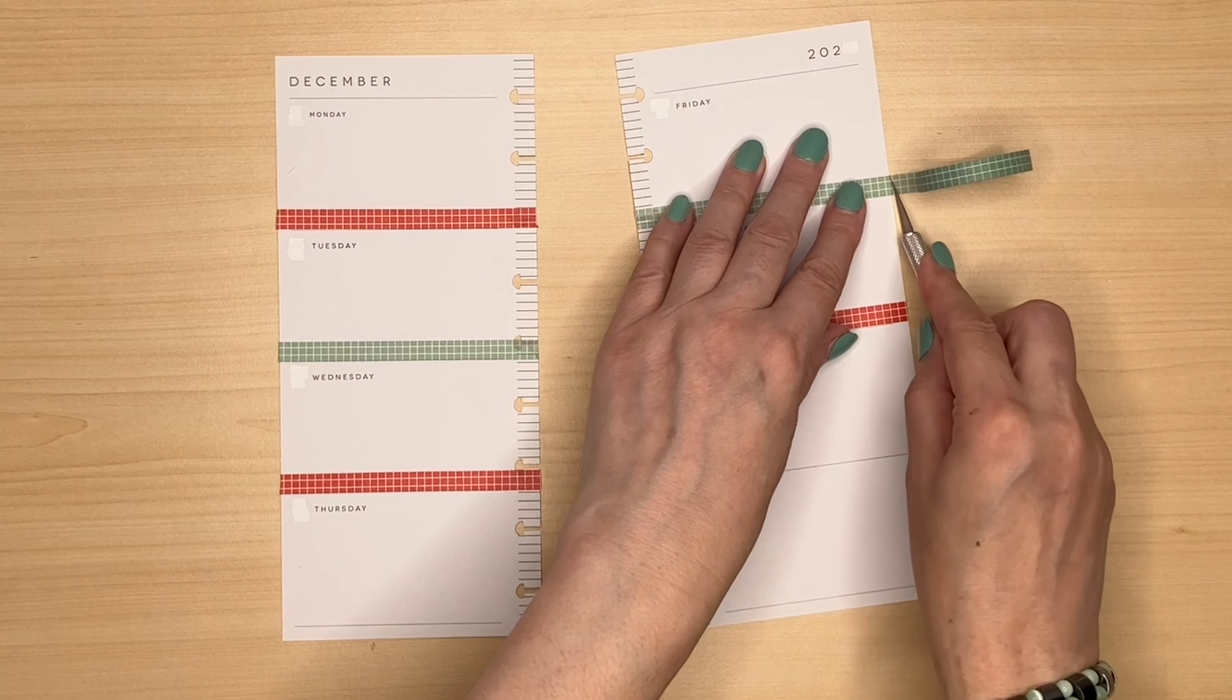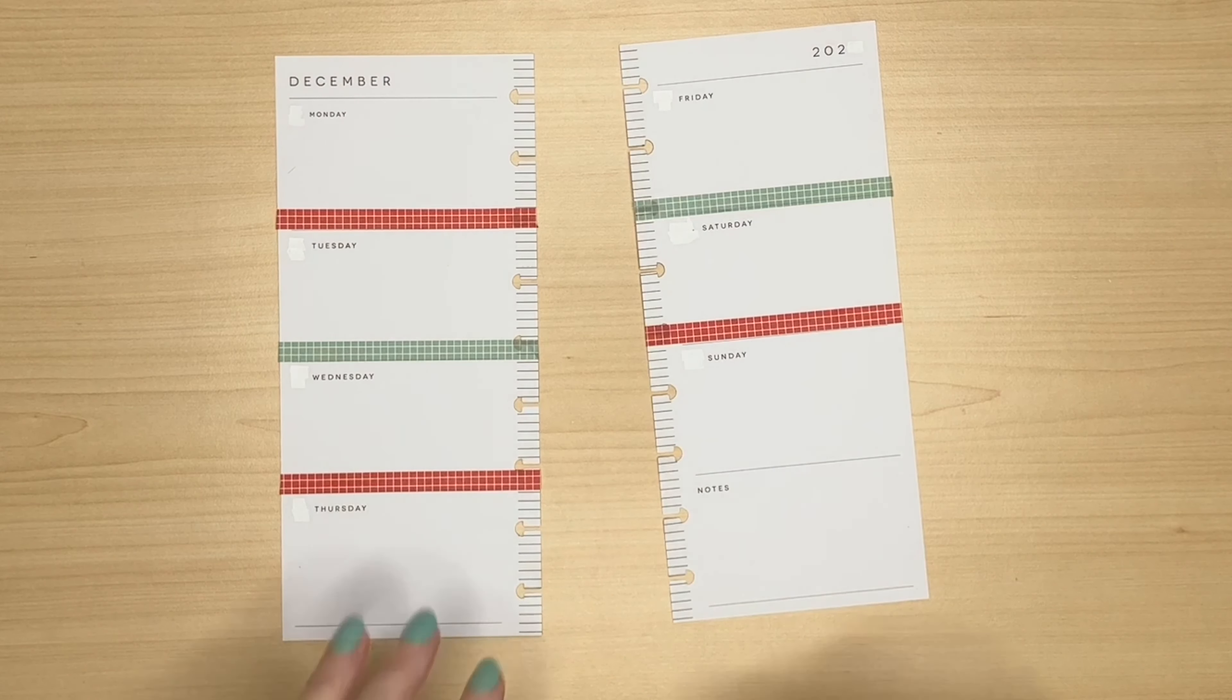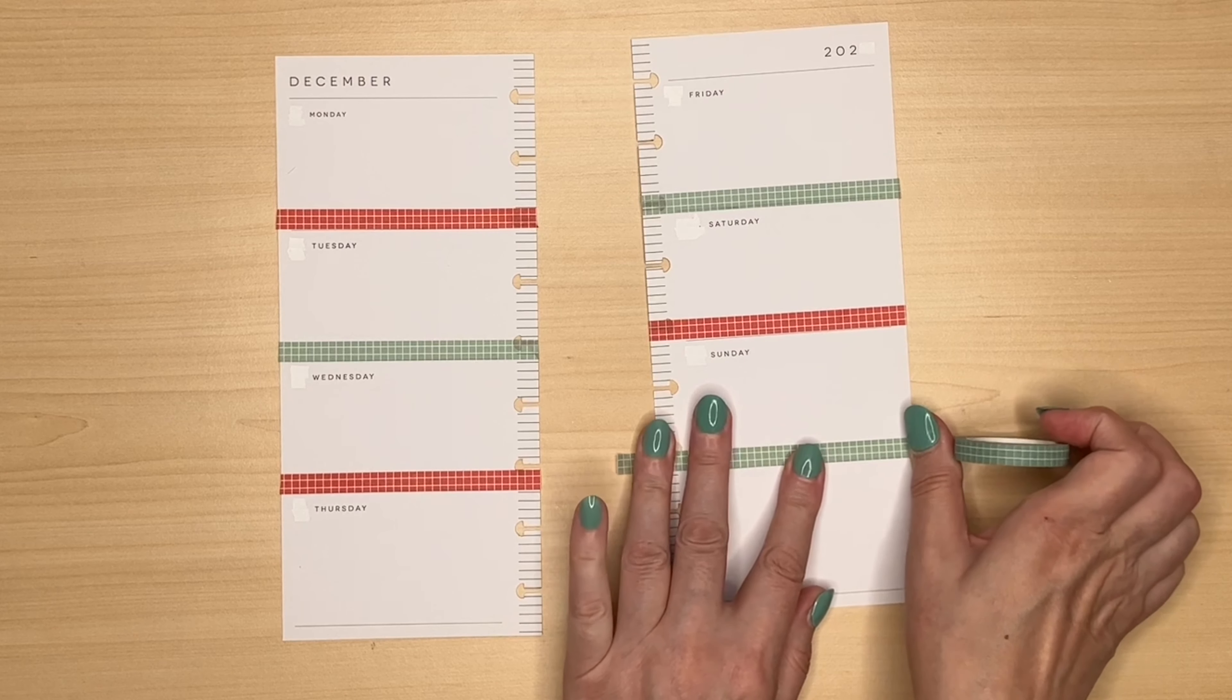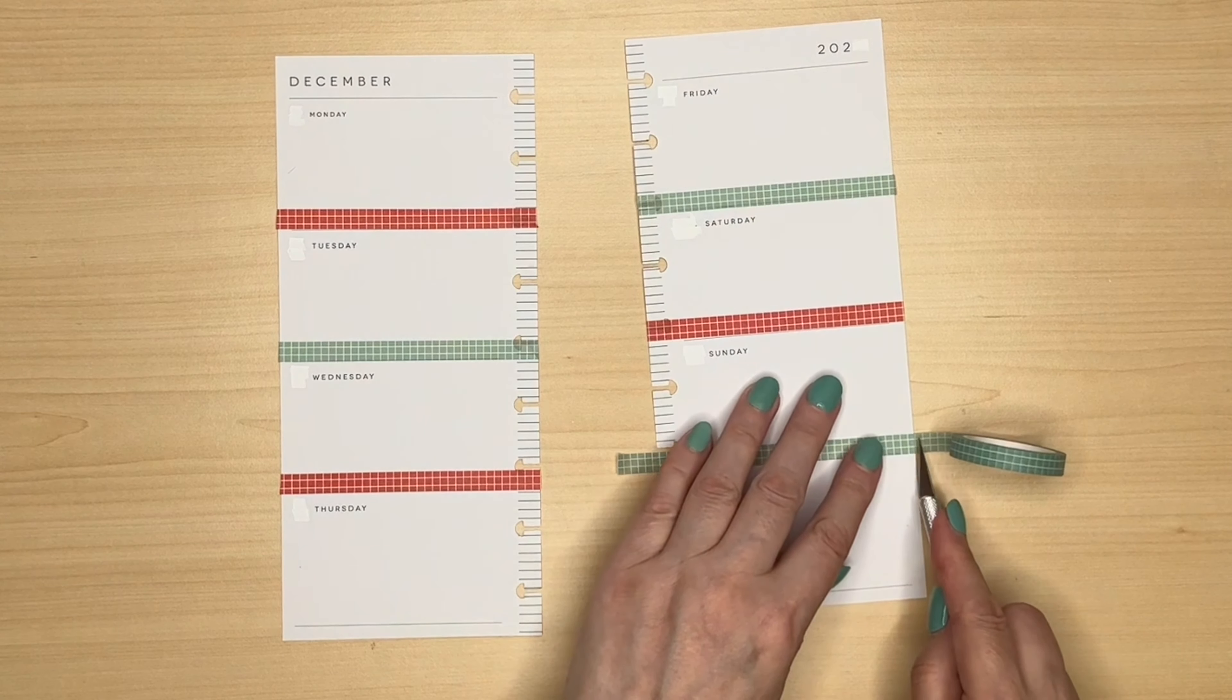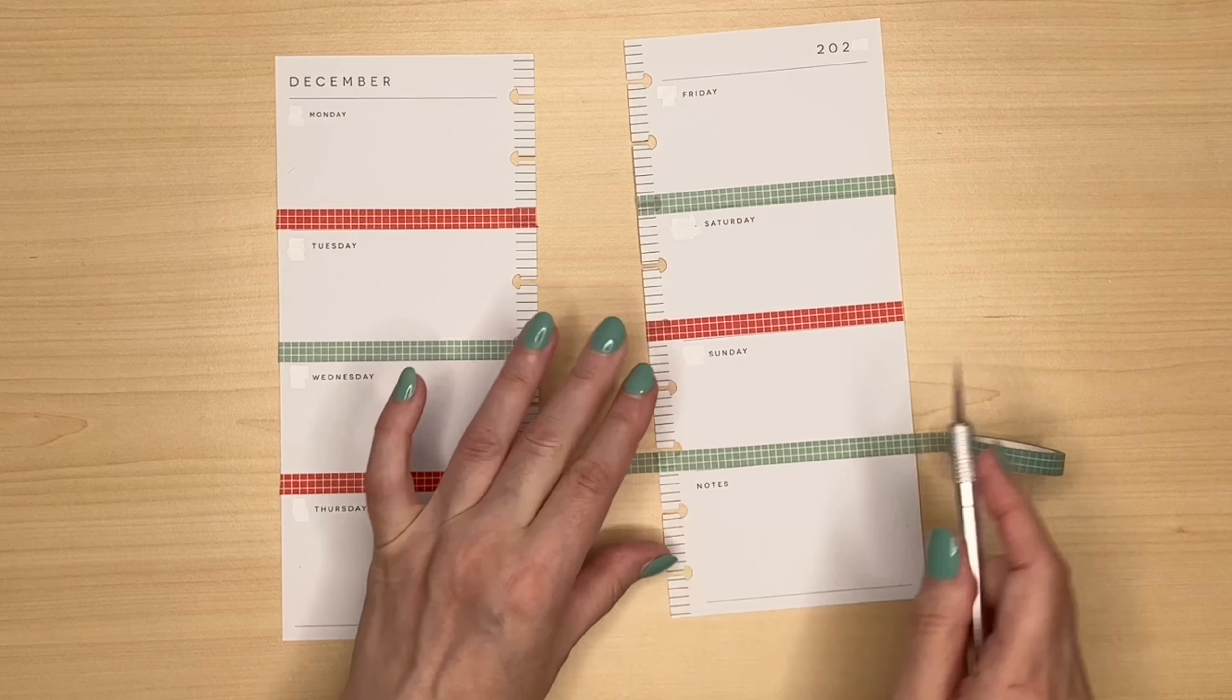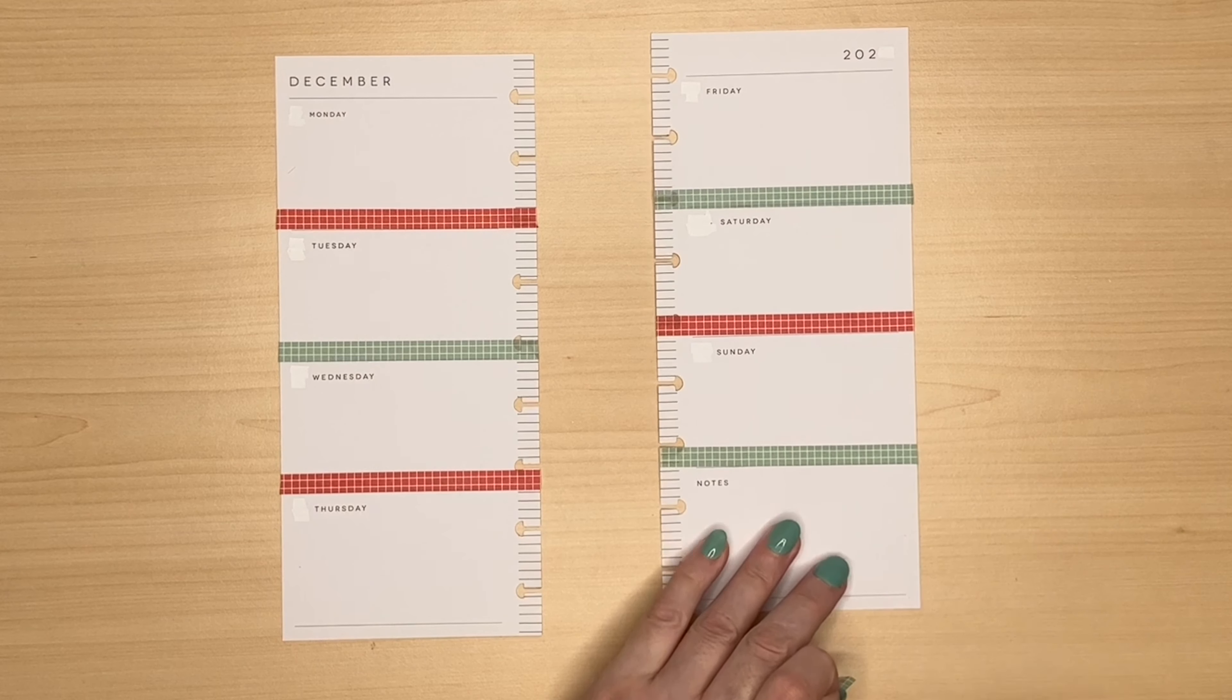I'm taking a bit of a risk with it next year because it does have some colour in the spine whereas this one was completely neutral with just some tiny dots. But I'm hoping I can make it work for me.